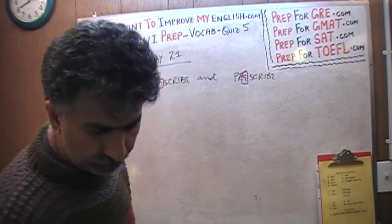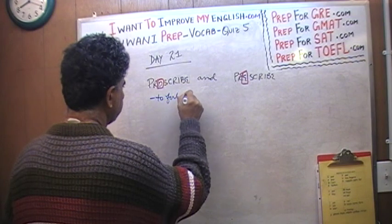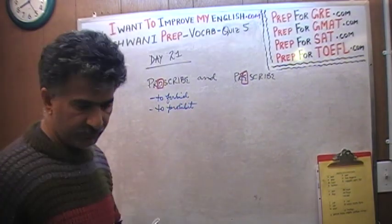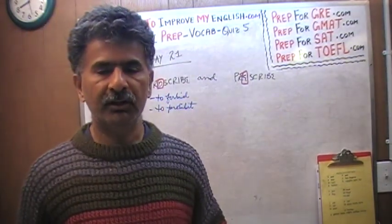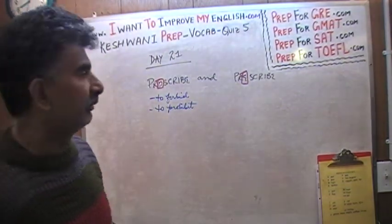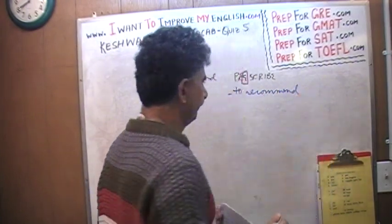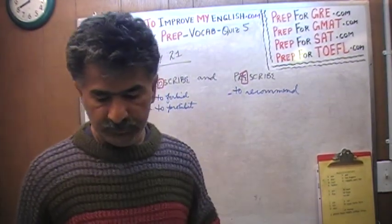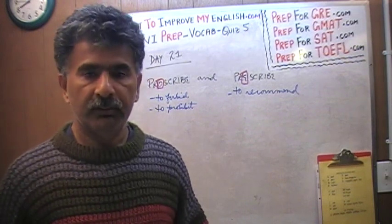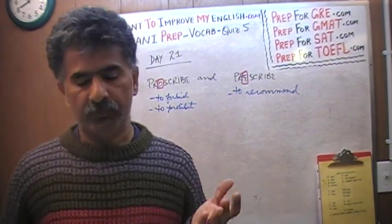Proscribe means to prohibit — if you are proscribing something, you are saying you cannot do it. Prescribe has almost the opposite meaning: it means to recommend. Your doctor gives you a prescription — he or she prescribes something, recommends that you should take this medicine to get better. That's called prescribed, and the noun of course is prescription.